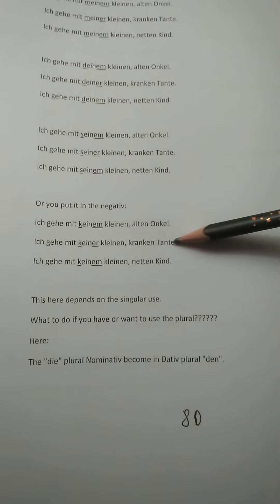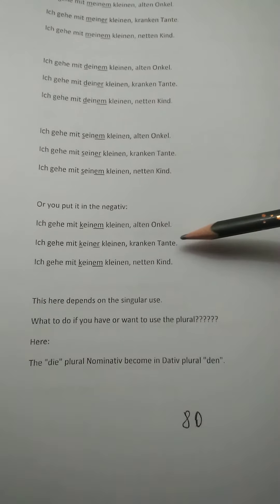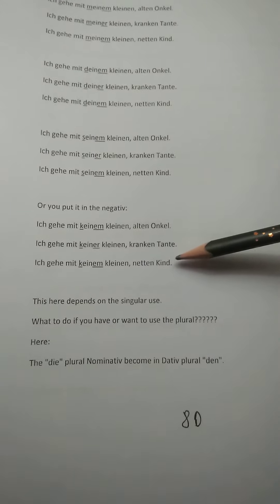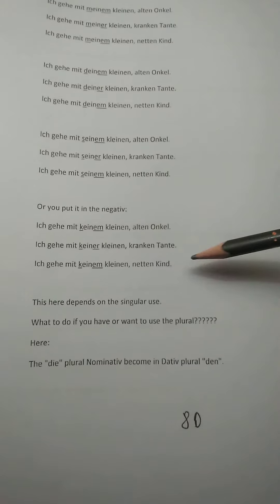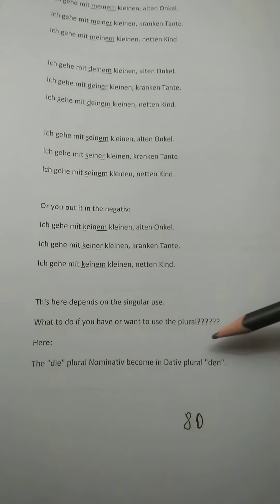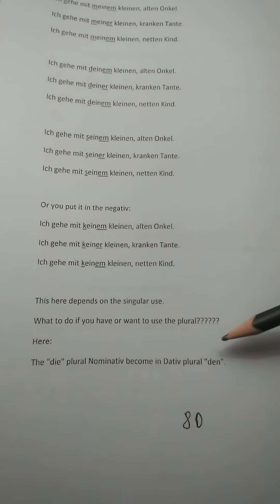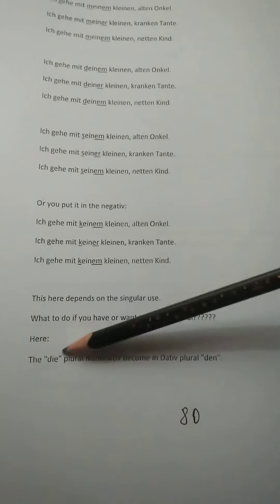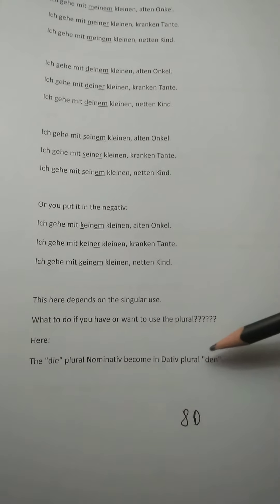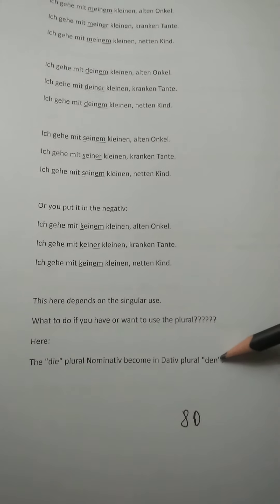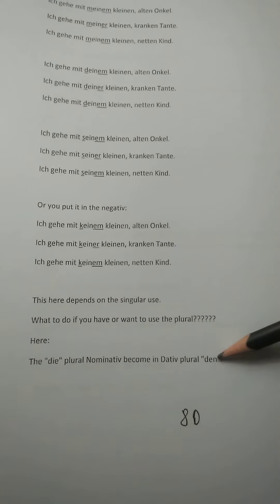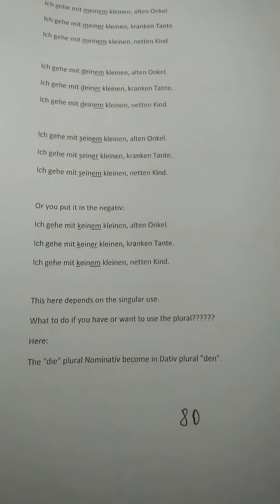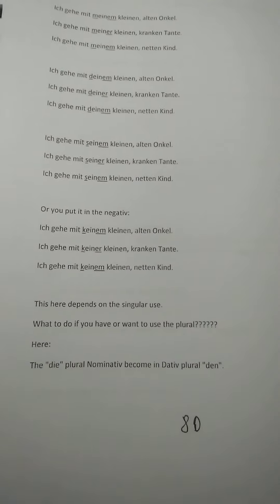Of course we also have the plural — like uncles, aunts, children. In the plural we use 'die,' and in the dative plural it becomes 'den.' How to use this also gives a problem — I come to that in the next part.